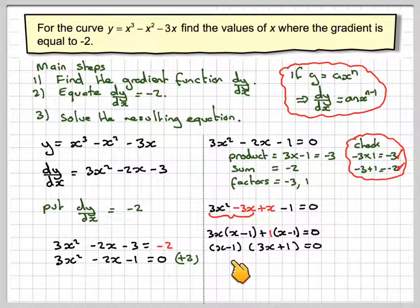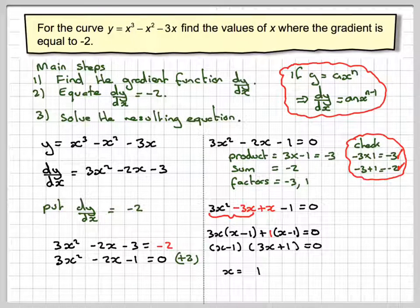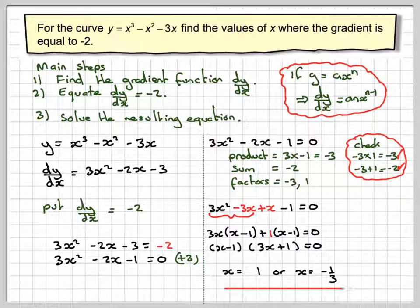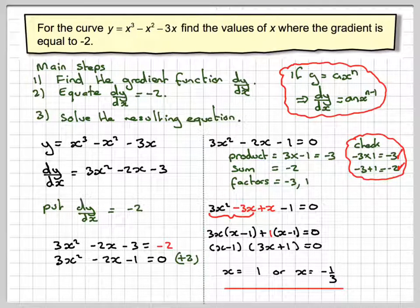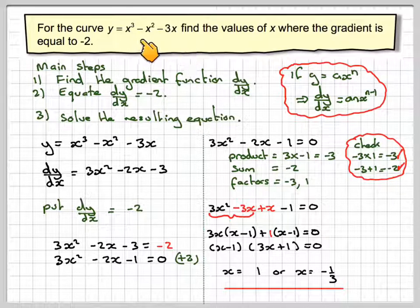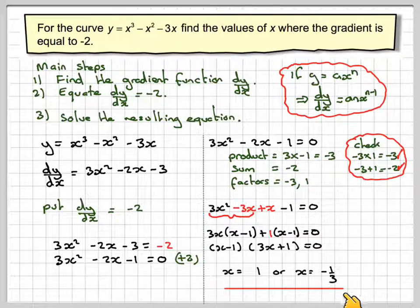So from this we can get the solution x is equal to 1, or x is equal to minus 1 third. So the places where the gradient is equal to minus 2 on this function is x equals 1, or x equals minus 1 third.